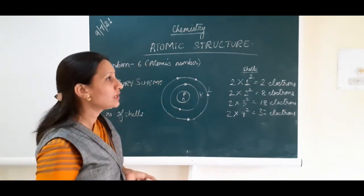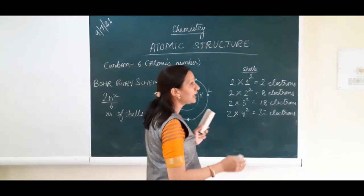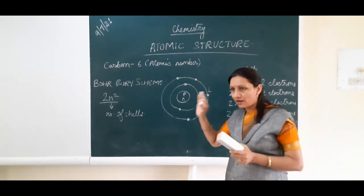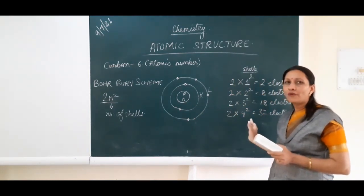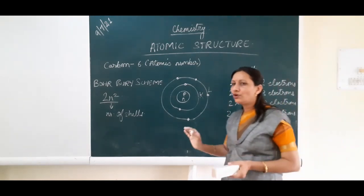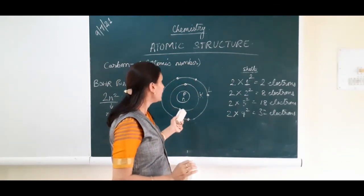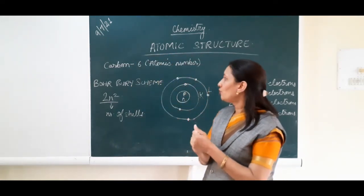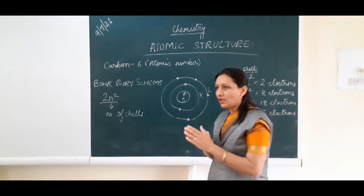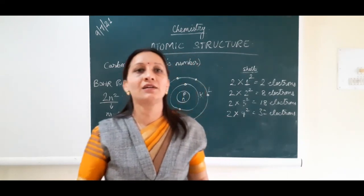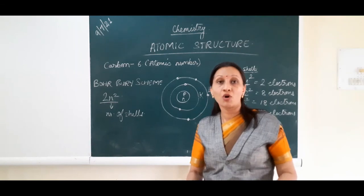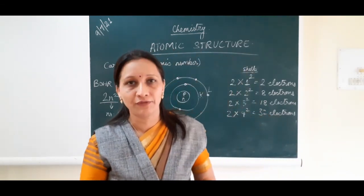We can write down the atomic structure of elements. If you know the atomic number and the 2N² formula, very easily you can draw the atomic structure. The arrangement of electrons in particular shells is known as electronic configuration. I hope atomic structure and electronic configuration are clear to you. As atoms are the building block of matter, similarly good deeds are the building block of human values. Your small good efforts can cause greater good in others' lives. Thank you.